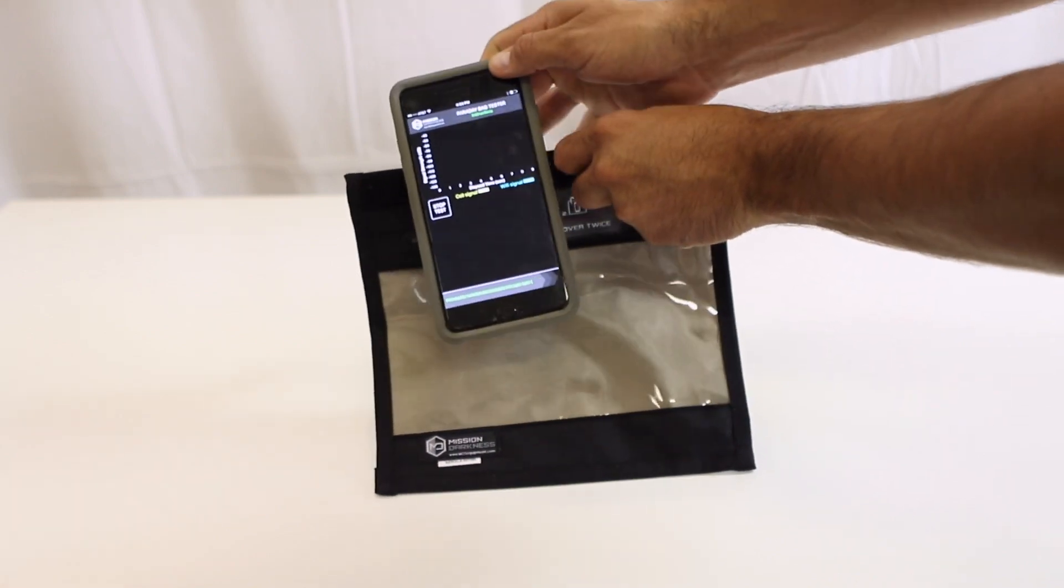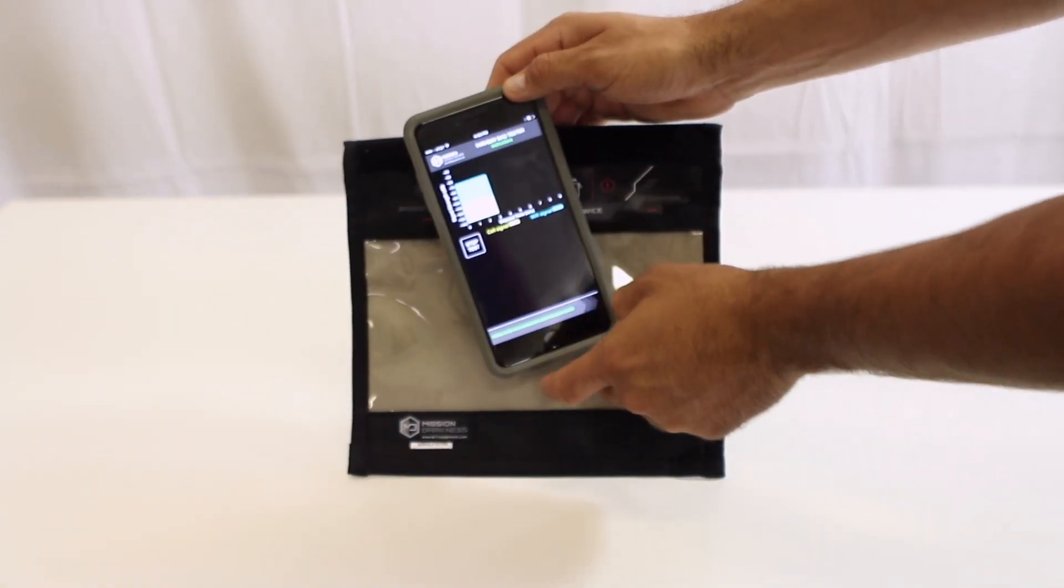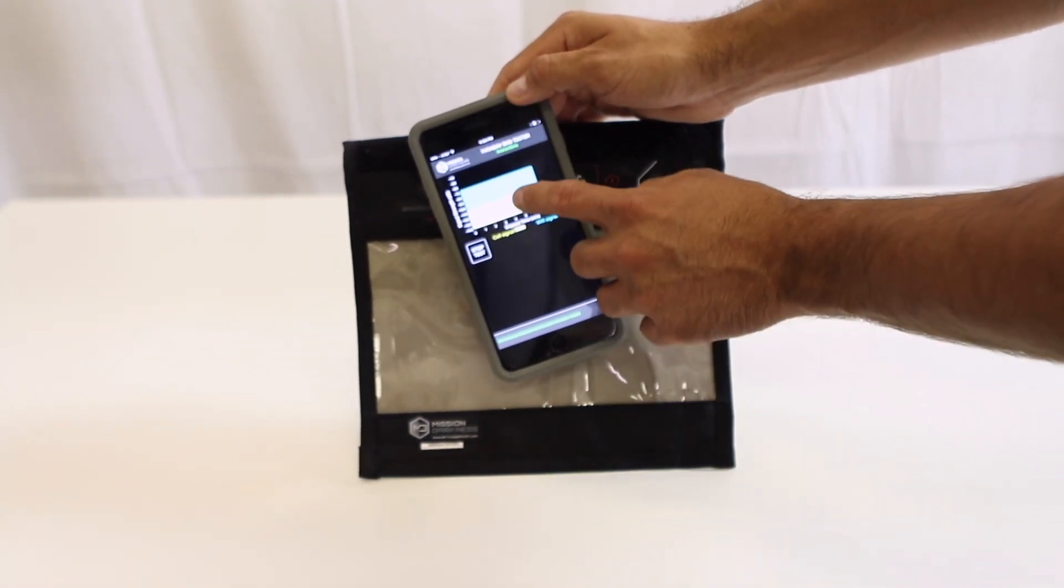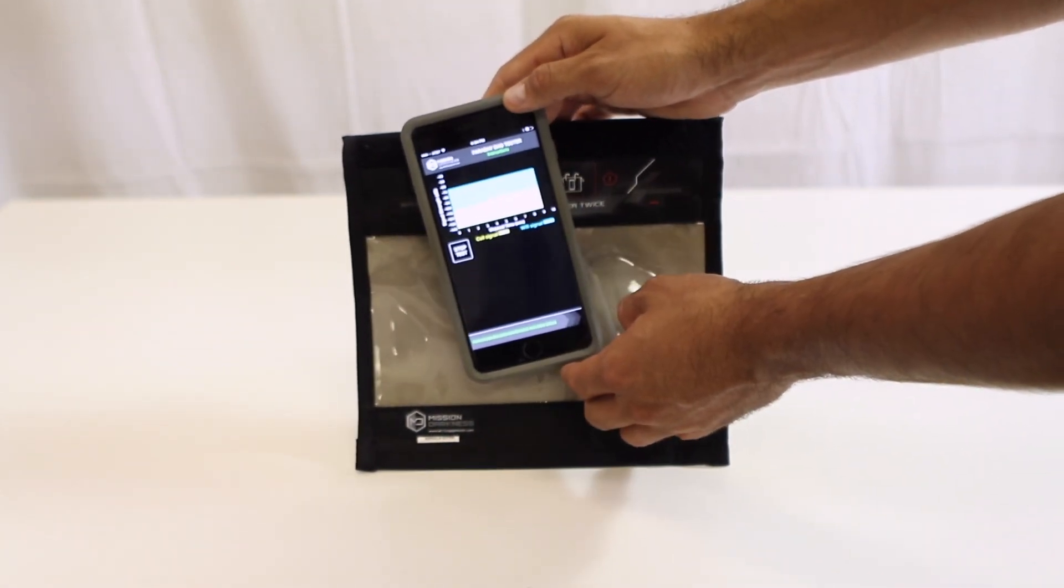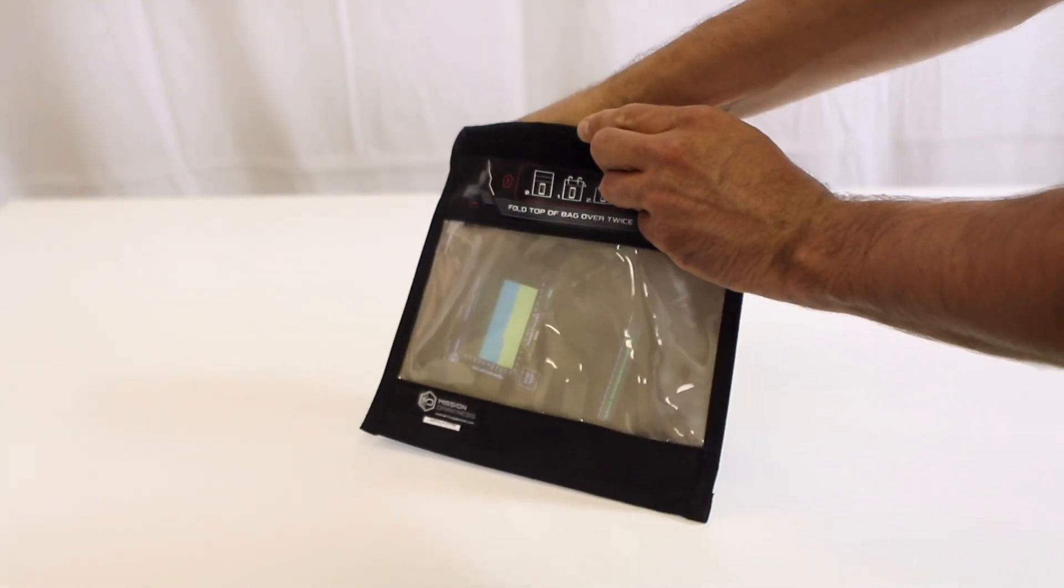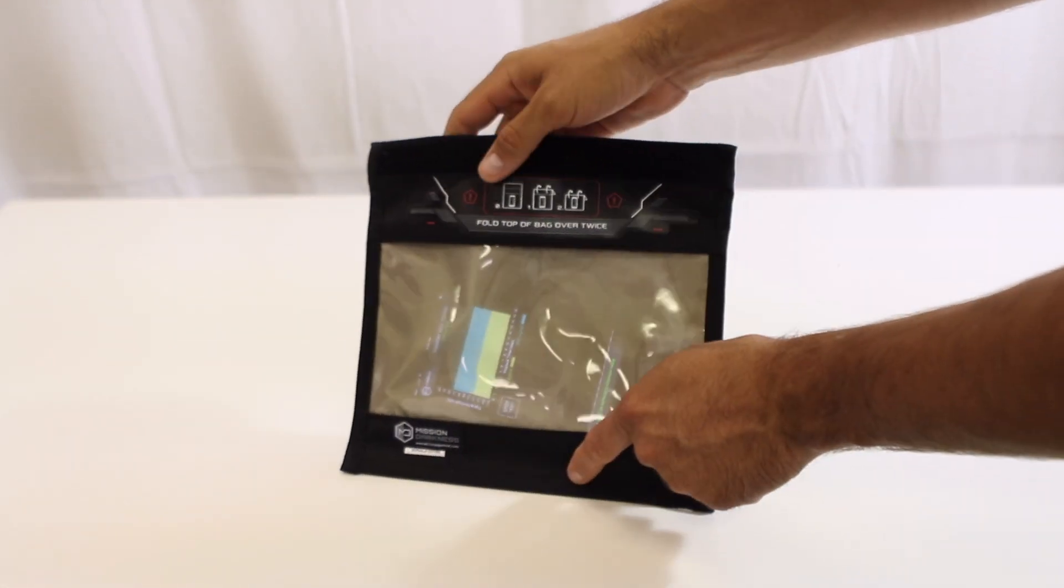We click start test. First, we're going to see the blue here. This is showing the signal strength of the Wi-Fi. We're right next to the router, so it's a pretty strong signal. The yellow is our cell signal. If the bag is working properly, we should see both of those drop down to zero pretty quickly.